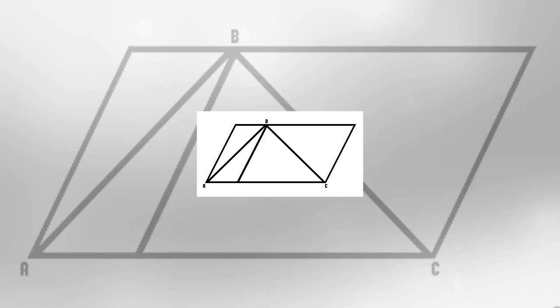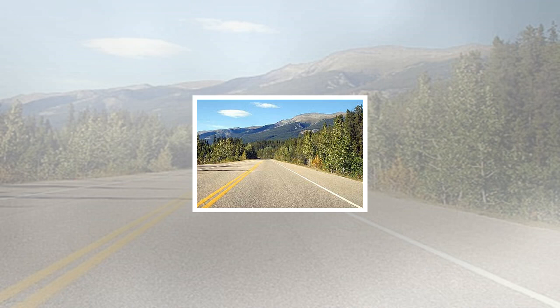The Müller-Lyer illusion: the center connecting line is seen as shorter in the top figure than in the lower figure. The figure above shows both superimposed to demonstrate that the center line is of equal length in both figures. Which line is longer, AB or BC? They are the same length. The Ebbinghaus illusion: you probably perceive the middle circle as smaller in the figure on the left, but they are actually the same size.